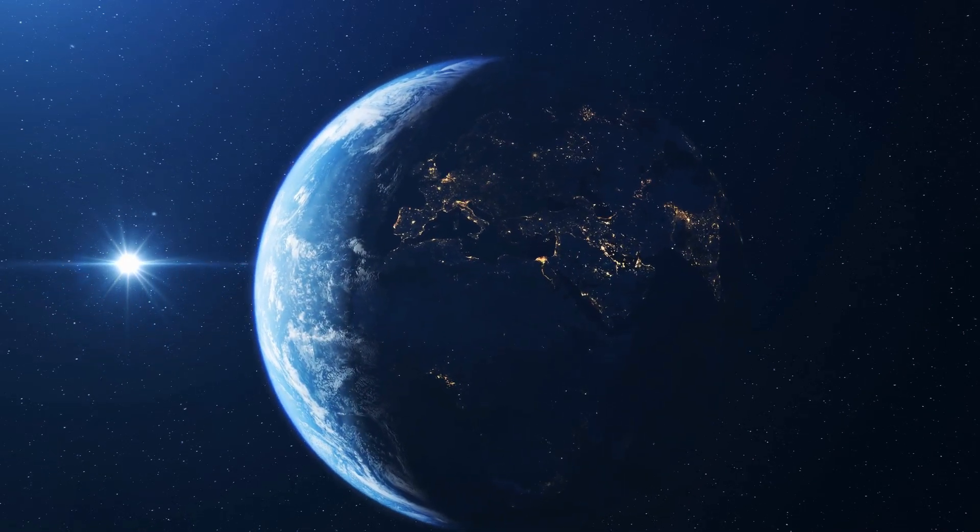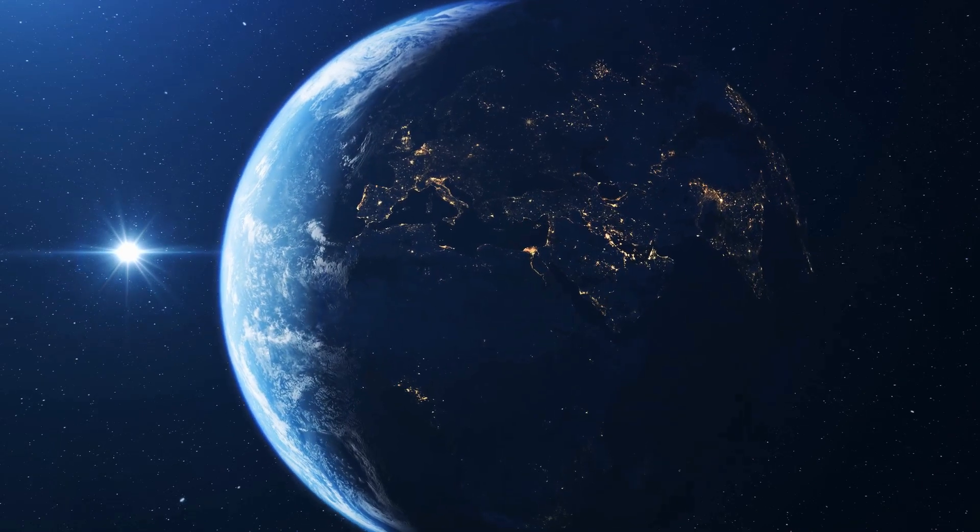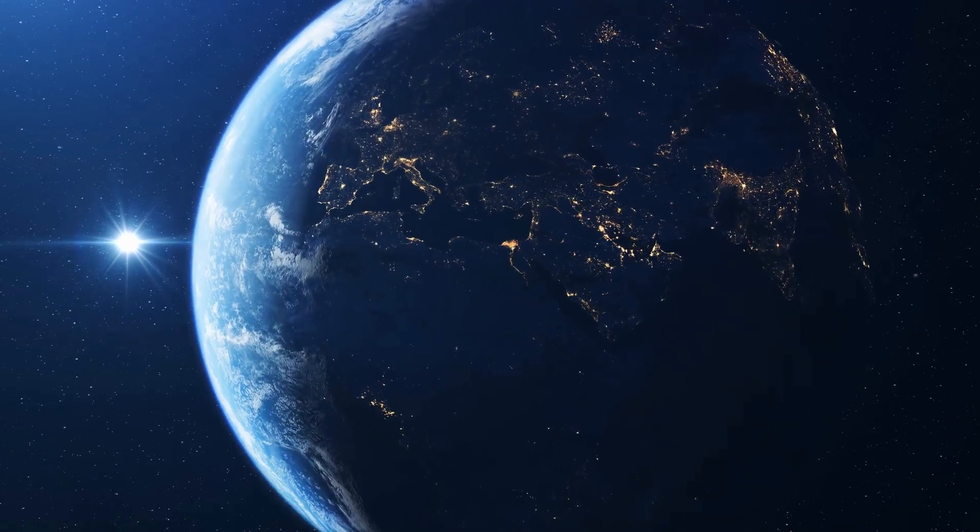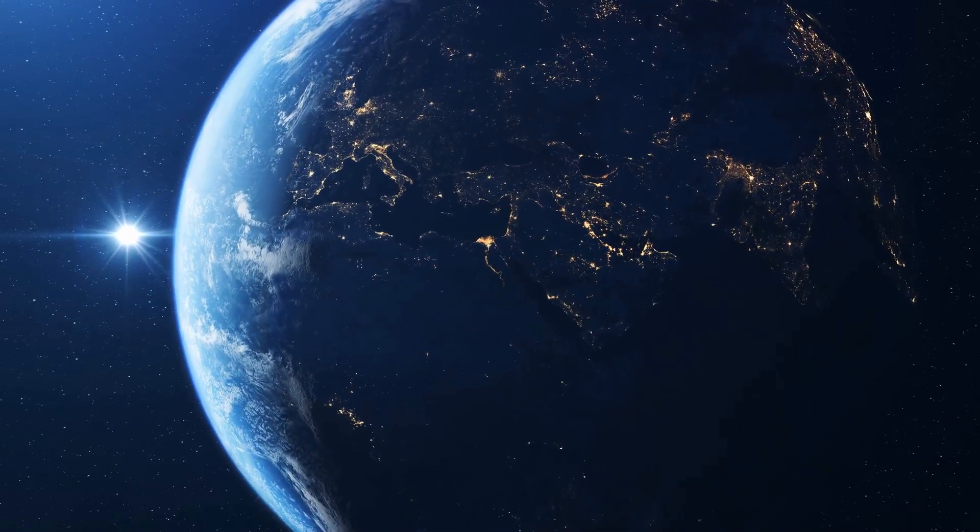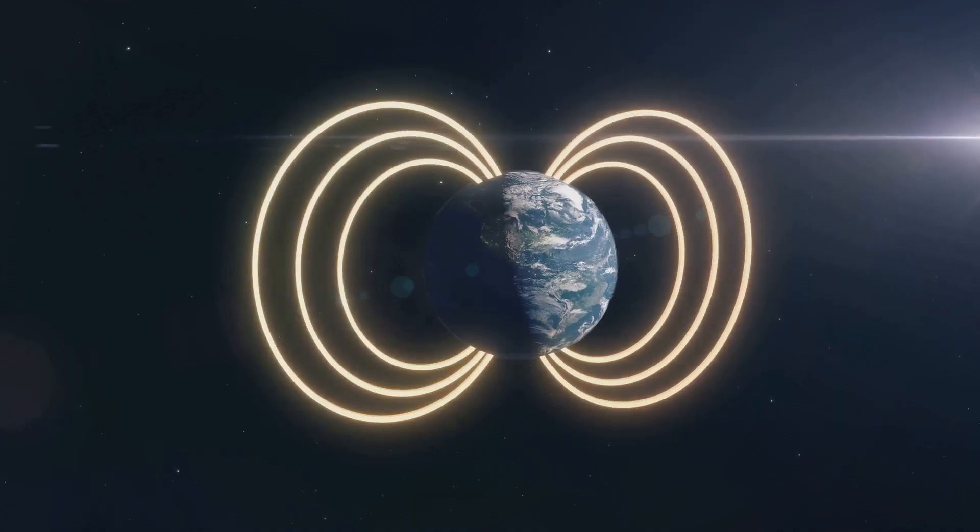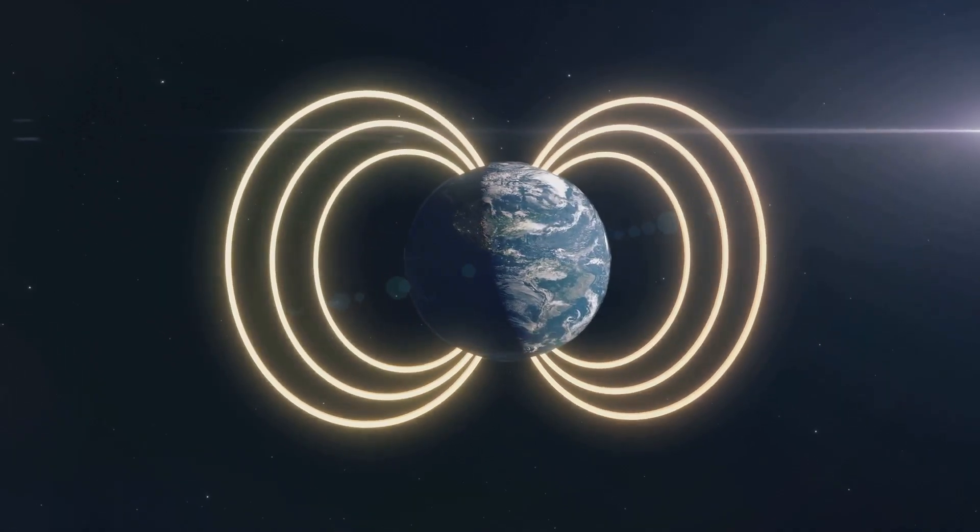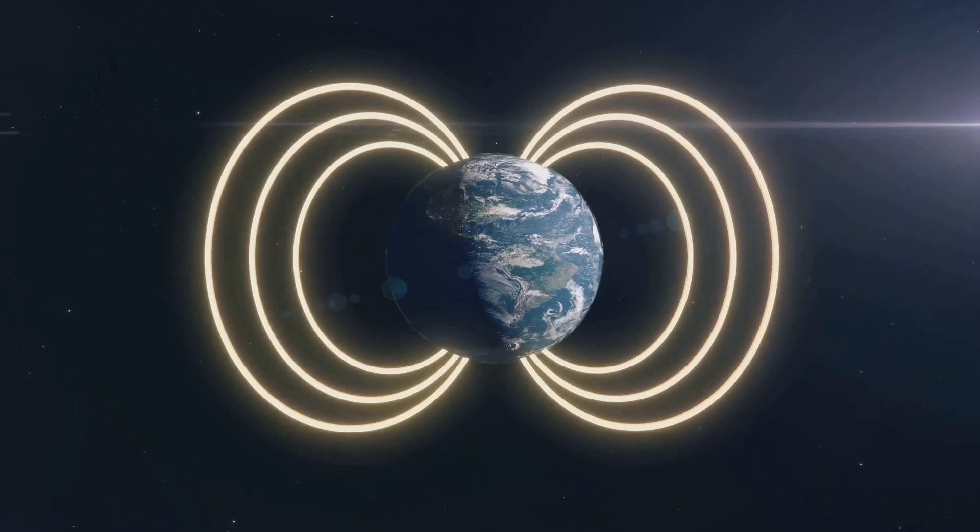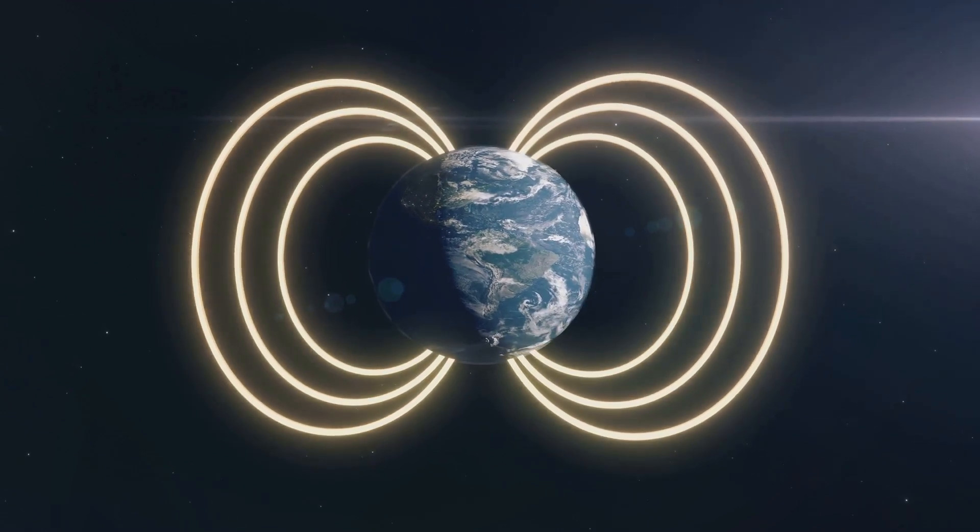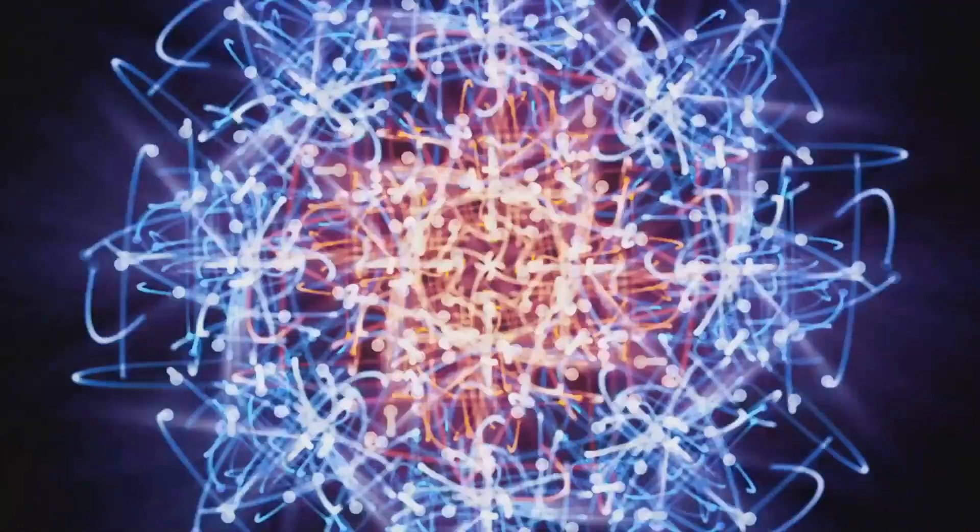Let's say we have two entangled particles, one here on Earth and the other one on Mars. If we observe the particle on Earth and find it spinning in a certain direction, the particle on Mars will instantaneously start spinning in the opposite direction. This happens faster than light could have traveled between the two particles, which is why it's so mind-boggling.